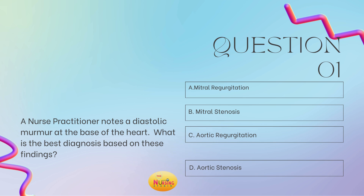I always recommend reading the stem of the question first because it allows you to slow down to ensure you're answering what is even being asked. Here it says, what is the best diagnosis based on these findings? If it's talking about a diagnosis, you need to run it back and see what the assessment findings are showing you. This is strictly a murmur-based question — a diastolic murmur that the nurse practitioner notes at the base of the heart. Make sure you know systolic versus diastolic and then know the location, and you'll be able to get these questions correct every time.